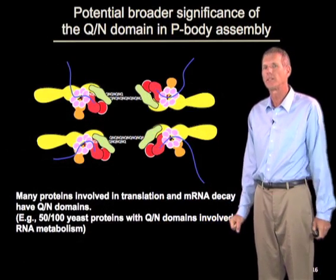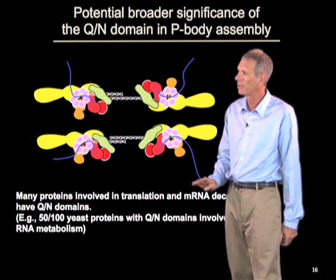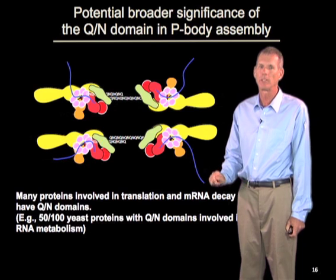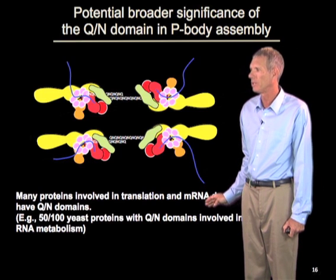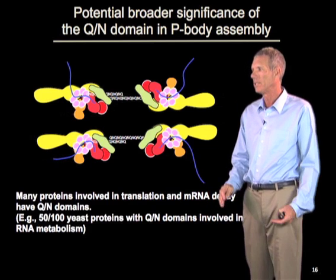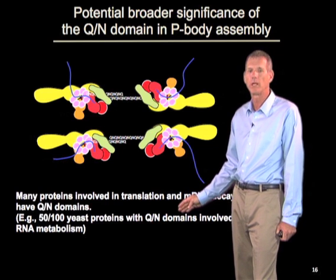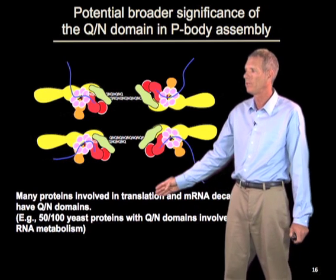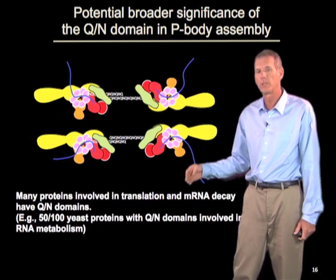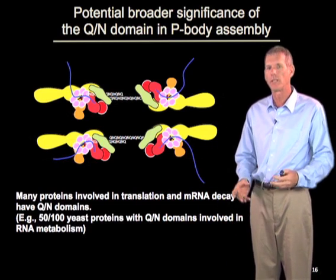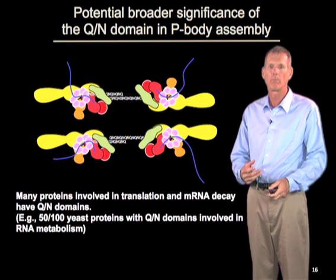It is interesting that there is a prion domain, or QN domain, involved in aggregation of these RNA protein complexes. Many proteins involved in translation and RNA degradation have these types of QN domains. For example, searching the yeast genome, about 100 proteins have the potential to form these types of aggregates through QN or prion domains. Of those 100, 50 are involved in translation or RNA degradation — over half. Many others we don't know what they do, so they might also be involved. This is going to be a common feature suggesting a tendency to form these aggregates for biological reasons we don't yet understand.